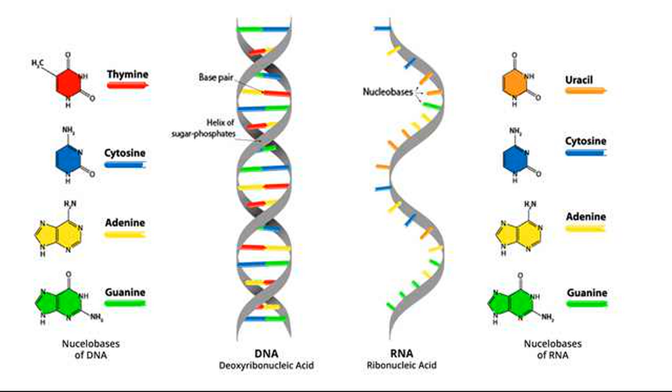Adenine bonds to thymine, or uracil, and cytosine bonds to guanine. So a purine always bonds with a pyrimidine.